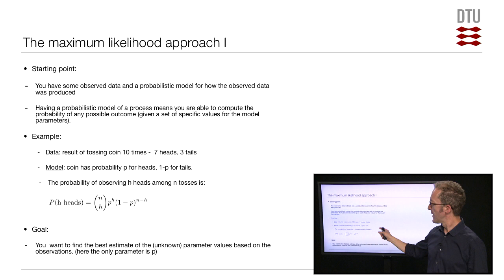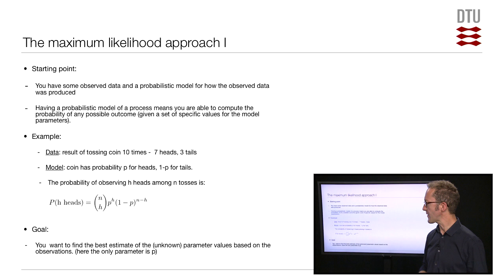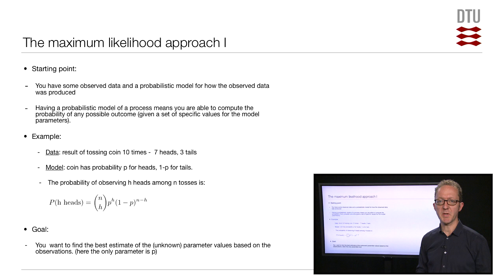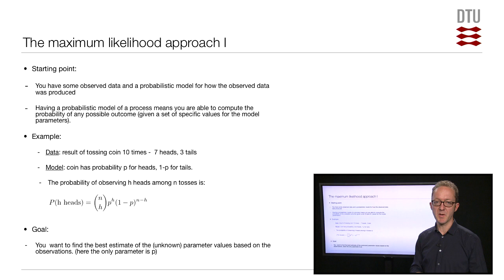Let's take an example to make that clearer. Say our data is the result of tossing a coin ten times, and it came up heads seven times and tails three times. Our model is that the coin has some probability p for ending up heads and one minus p for ending up tails. This is already a simplification — we're ignoring the possibility that the coin will stand on its edge, which is a reasonable simplification.